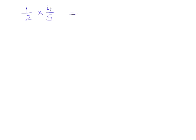My preferred method is to first simplify between the numerators and the denominators, and you can always do that in a bow-tie shape. If there's your multiplication sign and you extend it to a bow tie, it means you can simplify any numerator with any denominator — top with a bottom — across the multiplication sign and within each fraction.